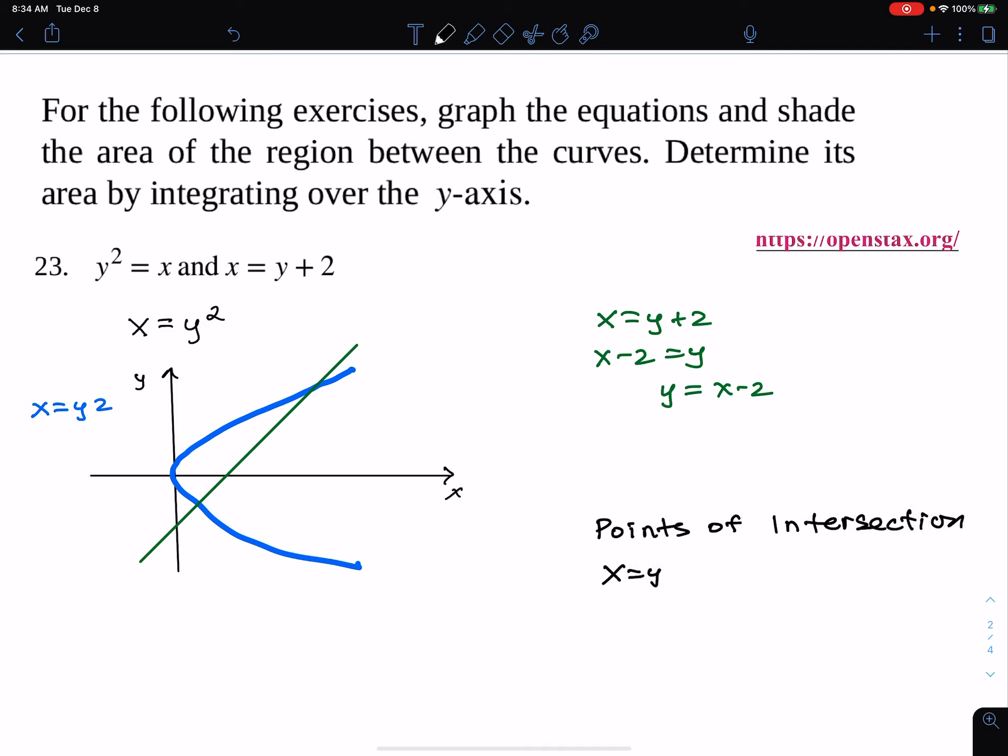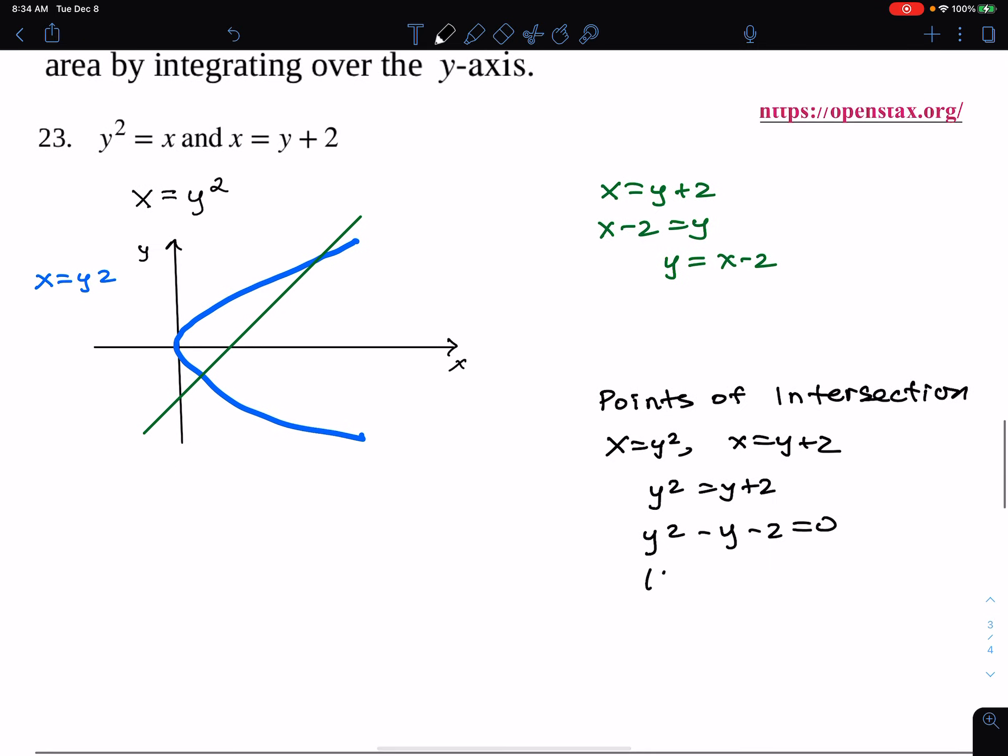I have x equals y squared, x equals y plus 2. So y squared minus y minus 2 equals 0. And I just factor that: y minus 2, y plus 1 equals 0. So y minus 2 equals 0, y plus 1 equals 0. So y equals 2, y equals negative 1. So the y coordinate from that point of intersection is negative 1. For the other point of intersection, I'll get 2.